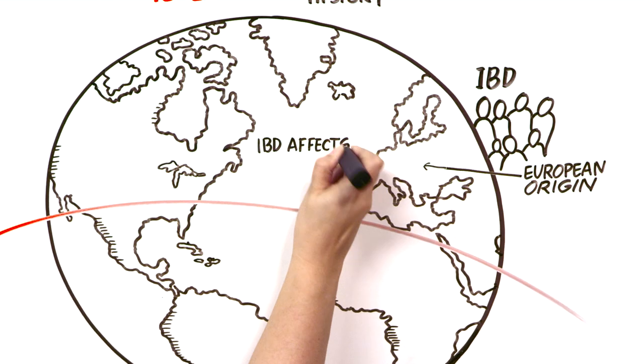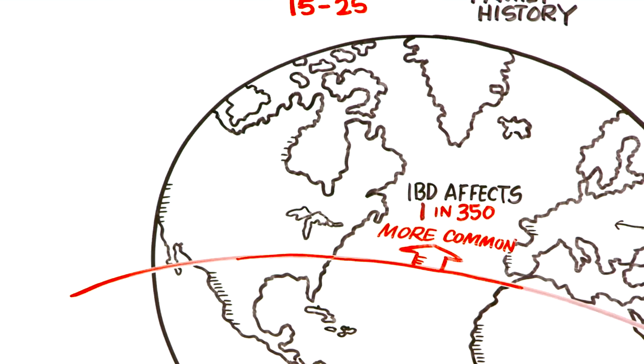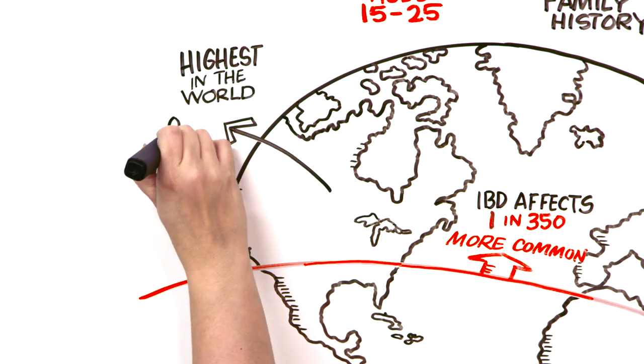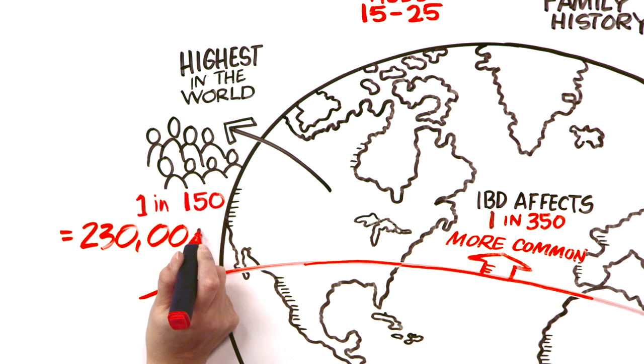IBD affects about 1 in 350 people in most nations, but it's more common in northern regions. Here in Canada, we actually have the highest rate in the world, with IBD occurring in as many as 1 in 150 persons, which translates to about 230,000 Canadians.